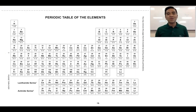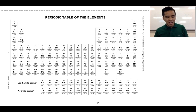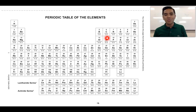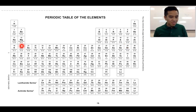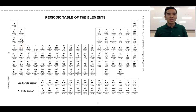We actually have this information given to us on the periodic table that we'll use in class. It shows the relative atomic mass of the different elements. Carbon has a relative atomic mass of 12.01, chlorine shows 35.45, and magnesium comes in at 24.31 — very close to our calculated value of 24.32, with small differences depending on the precision of the data used.